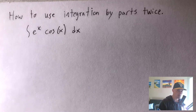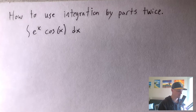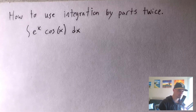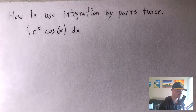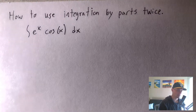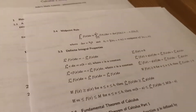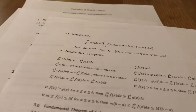Hey guys, Jake here, coming at you with another math lesson today. Today I'm going to be showing you how to use integration by parts twice. Sometimes when you're trying to integrate something using integration by parts, you actually have to apply it twice to the same problem to get your answer. So this is going to be an example of that — we're going to integrate e to the x times cosine x dx.